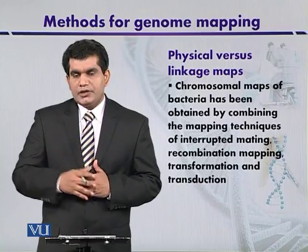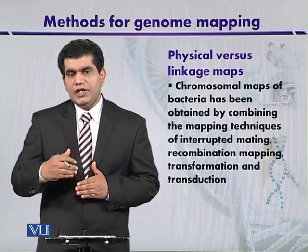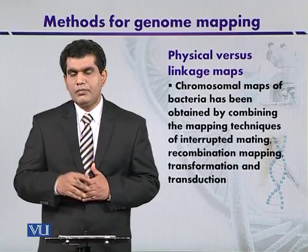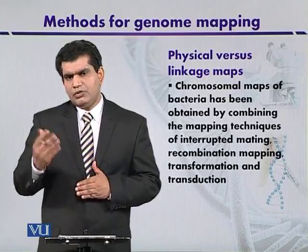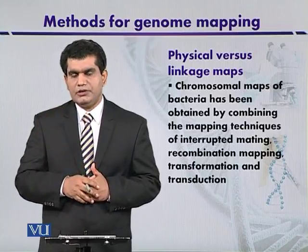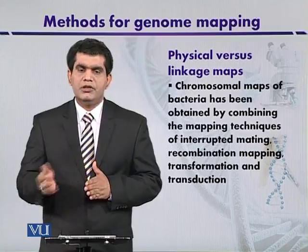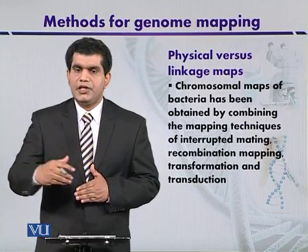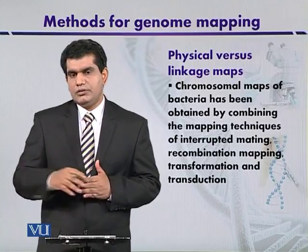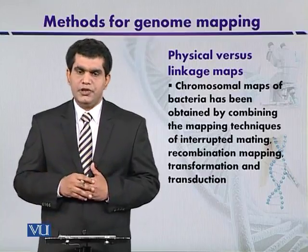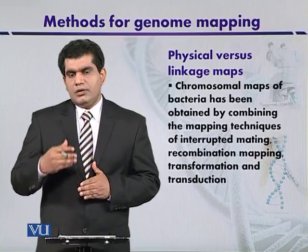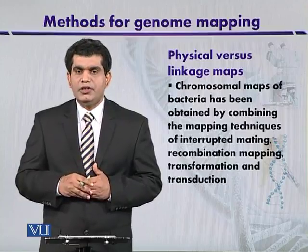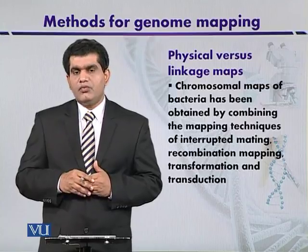Taking the example of E. coli, the first genetic linkage map was constructed around 1963, and it gave the position of around 100 genes. Then, after 27 years, around 1990, by using more advanced techniques, the position of around 1400 genes became known, as the map became more elaborated.